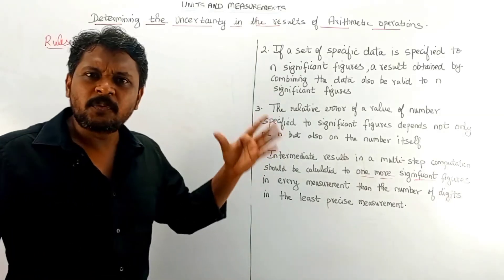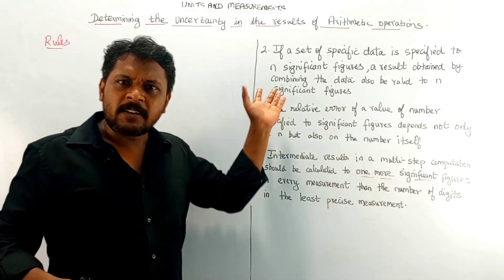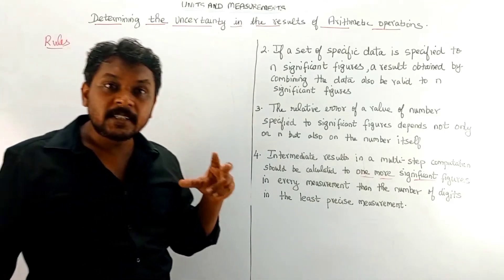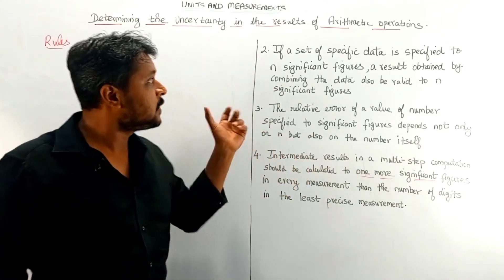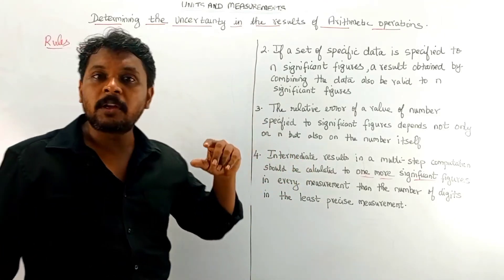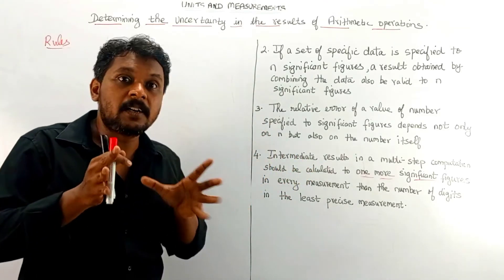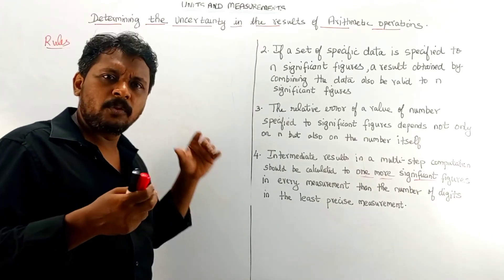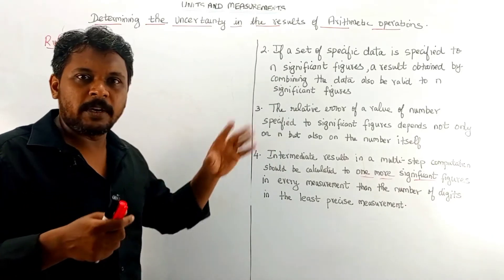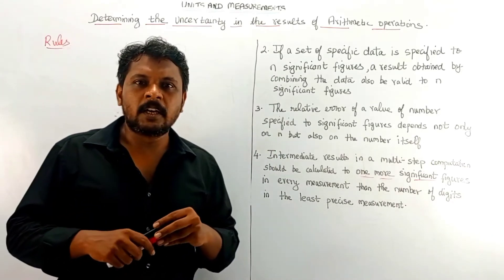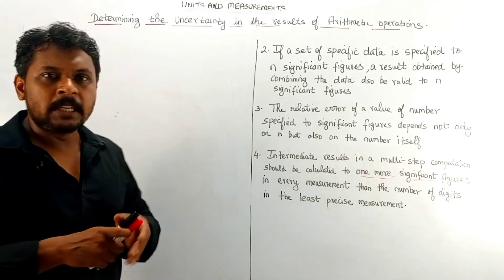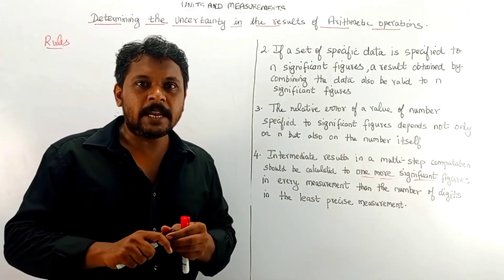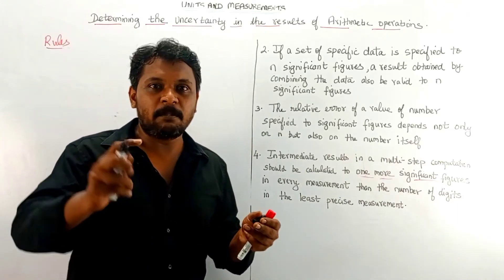Hello viewers. In this video I will discuss the topic on how to determine the uncertainty in the results of the arithmetic operations, or error in the result of the arithmetic operations. Here we have a few statements to mention these things. The first rule I will explain with an example.